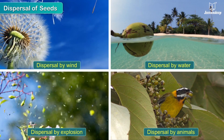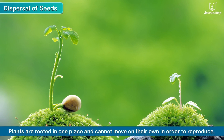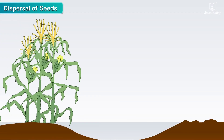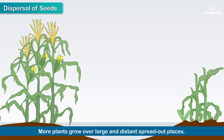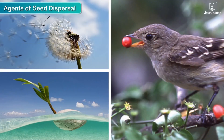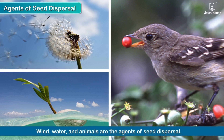Dispersal of seeds. Seed dispersal is the process of scattering seeds over long distances. Unlike animals, plants are rooted in one place and cannot move on their own in order to reproduce. Dispersal of seeds ensures that more plants grow over large and distant spread-out places. Seeds get dispersed by way of wind, water and animals — these are known as agents of seed dispersal.